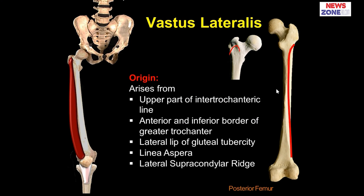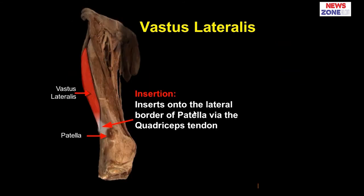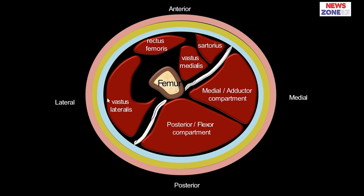The vastus lateralis arises from the upper part of the intertochanteric line, anterior and inferior border of the greater trochanter, lateral lip of the gluteal tuberosity, linea aspera, and lateral supracondylar ridge. You can see the upper part of the intertochanteric line going anterior and inferior to the greater trochanter, then following the lateral lip of the gluteal tuberosity, then the lateral lip of the linea aspera, and ultimately the lateral supracondylar line. Vastus lateralis is inserted into the lateral border of the patella via the quadriceps tendon.